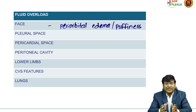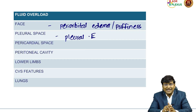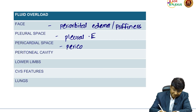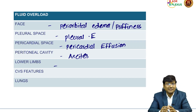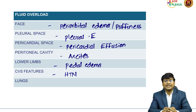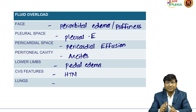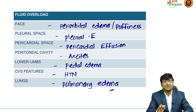The fluid accumulates in all the serous cavities: in the pleural space resulting in pleural effusion, in the pericardial space resulting in pericardial effusion, and in the peritoneal cavity resulting in ascites. It also accumulates in the lower limbs causing pitting edema. The cardiovascular manifestation is hypertension, and fluid within the lungs results in pulmonary edema, causing severe sudden onset dyspnea.